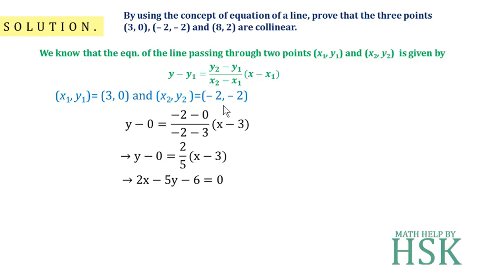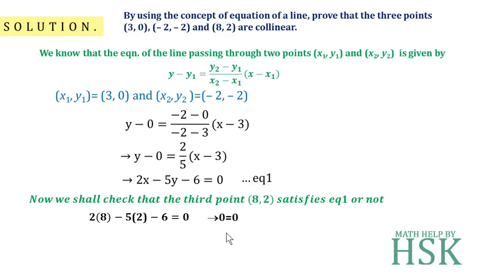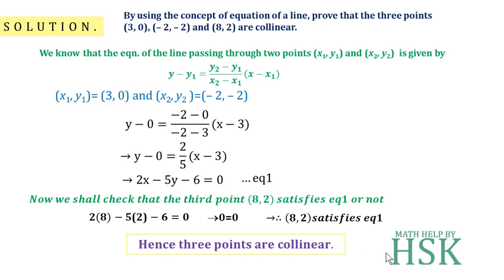Now we check whether the third point (8, 2) satisfies equation number 1. Substituting x = 8, y = 2: 2(8) − 5(2) − 6 = 16 − 10 − 6 = 0. We get 0 = 0, so the third point (8, 2) satisfies equation number 1.